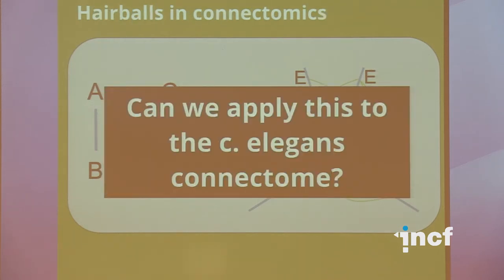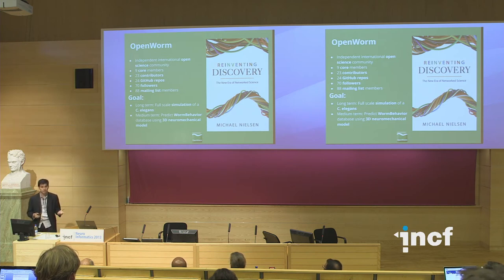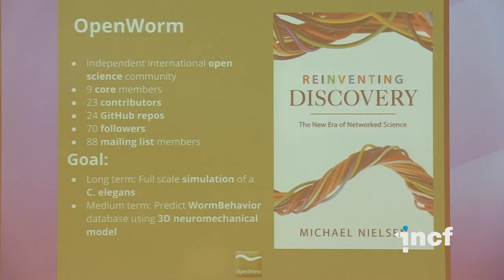So the question we asked with the Open Worm project is: can we apply this to the C. elegans connectome? The Open Worm project is an international open science community. It has nine core members and 23 contributors, 24 different GitHub repositories and 70 GitHub followers, and 88 folks on the high-traffic mailing list. It doesn't have a headquarters — it's an open science community online. This is inspired by books like Reinventing Discovery by Michael Nielsen. The goal of the project is to create a full-scale simulation of C. elegans.